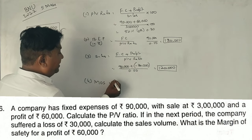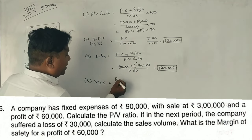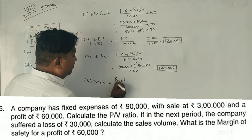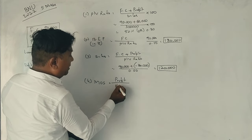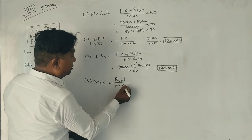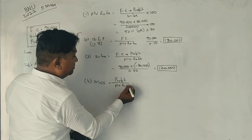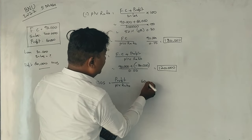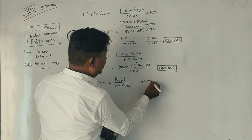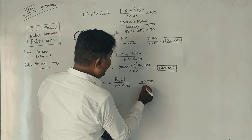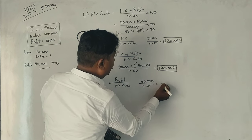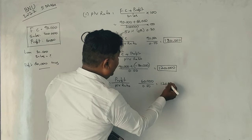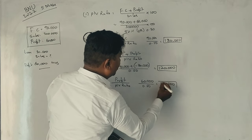Margin of safety is profit divided by PV ratio. Profit is 60,000 divided by 0.50. The margin of safety is 1,20,000 rupees.